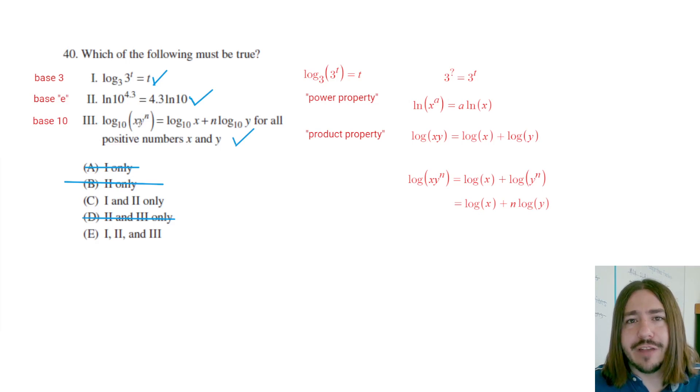Usually you just assume that you're only going to have values that are valid for the domain anyway. So this is typically just sort of an implied assumption, but they spelled it out here for you. I guess maybe just to kind of confuse you a little bit, but you don't really need to pay that piece of the statement much attention here. So anyway, yeah, all three of these are going to be true, so our answer here is going to be choice E.